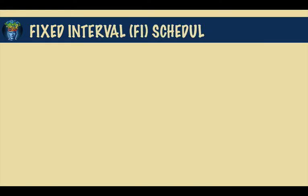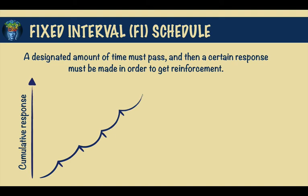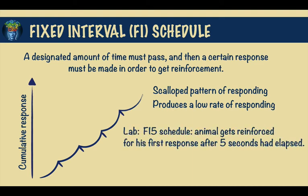Next we have the fixed interval reinforcement schedule. Here, a designated amount of time must pass, and then a certain response must be made in order to get reinforcement. On the cumulative recorder, this schedule usually produces a scalloped pattern of responding in which little behavior is produced early in the interval, but as the interval nears the end, the rate of responding increases. But overall, this produces a fairly low rate of responding. A lab example would be an FI5, where the animal would get reinforced for his first response after 5 seconds have elapsed.